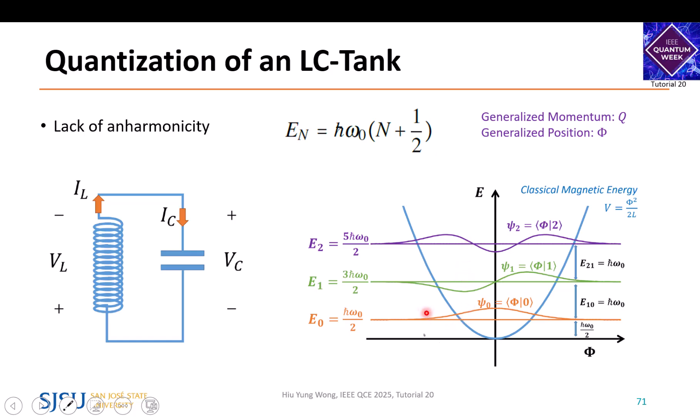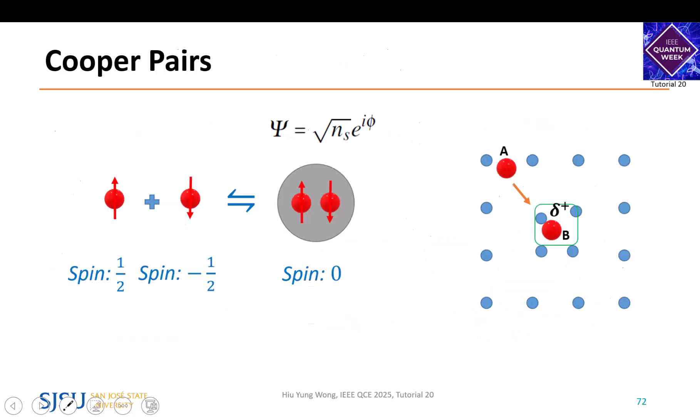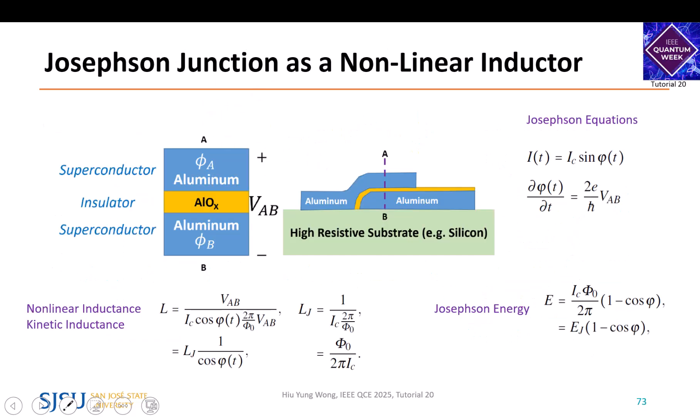While I have zero state and one state, I also have a two state, and it's easy for the system to go to a higher state. Then you exit the computation space—we've been talking about zero and one, there is no longer a qubit.